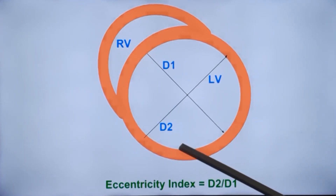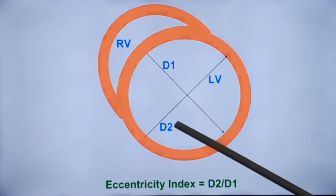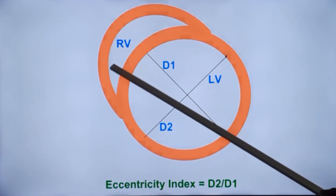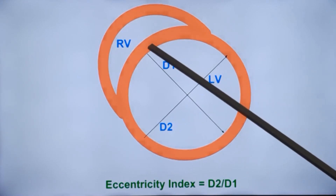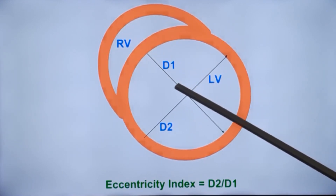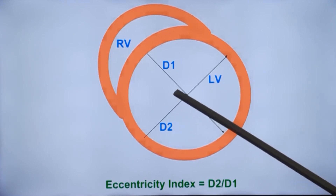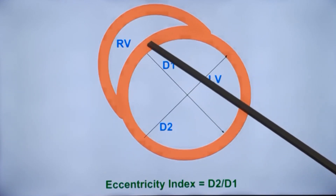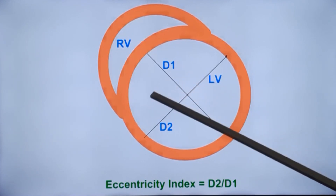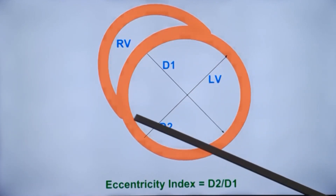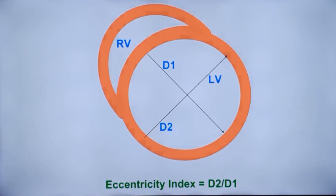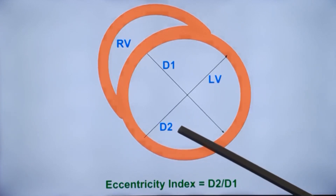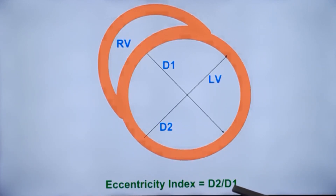When there is systolic overload, the difference is present in both systole and diastole. Because of the high pressure in the right ventricle, the septum is pushed towards the left ventricle in both systole and diastole. In severe right ventricular hypertension, especially in pulmonary hypertension or severe pulmonary stenosis, the septum gets displaced, so instead of a circular cavity, the left ventricular cavity becomes almost D-shaped. This difference is quantitated by measuring the eccentricity index.